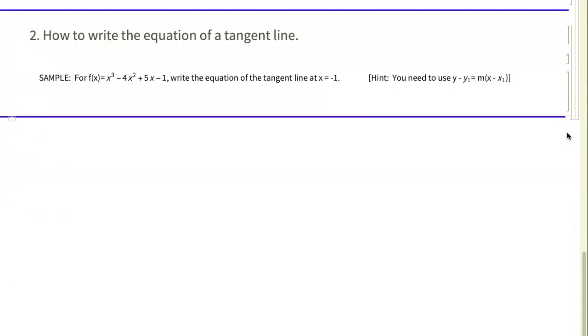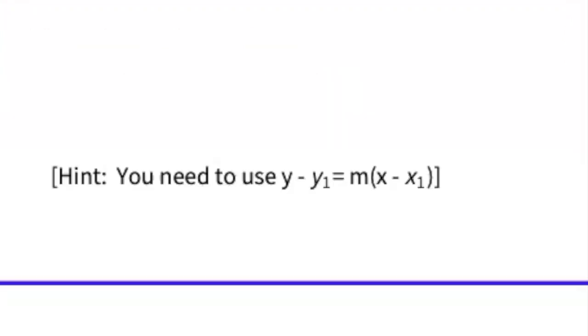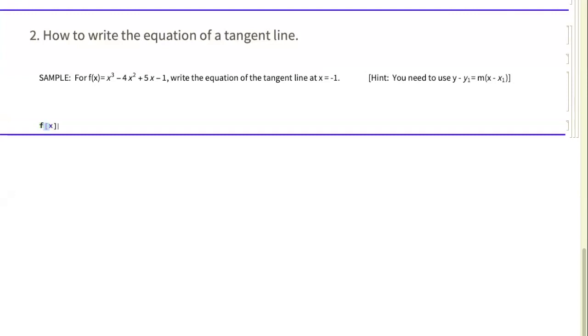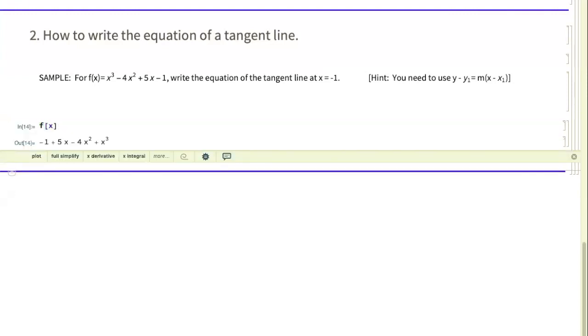In this next example, I'm being asked to write the equation of a tangent line. And I'm using the same function from above f of x. And we're going to write the equation of the tangent line, the line that touches that curve at only one point for x equals negative one. There's a hint there that you need to use something called the point slope formula, y minus y1 equals m times x minus x1, when you're ready to write that equation of a tangent line. The first thing you would do would be to store your function. Mine is still stored from above, as I just showed you there.